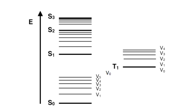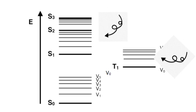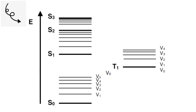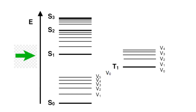Let's dissect the key components of a Jablonsky Diagram. The horizontal lines represent the energetic states of the molecule or system, while the vertical axis, labeled E, denotes the relative energies of these states. S0 represents the ground state, S1 signifies the first excited singlet state, and T1 represents the first excited triplet state.